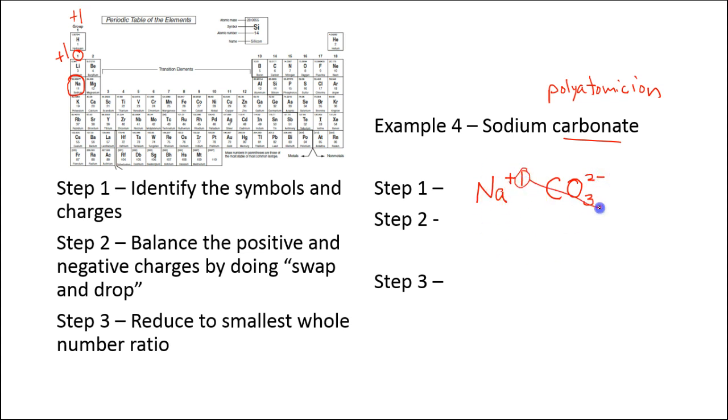And then we'll do our swap and drop. So in this case, we have 2 sodiums. We only have 1 carbonate, so we don't need any parentheses. And here we go. Step 3, reduce the smallest whole number ratio. That's not necessary because it's already reduced. So sometimes you don't need to do step 3. Sometimes you do. You have to look carefully. Remember, with the polyatomic ions, we don't ever want to change any of the subscripts on that. We'll use parentheses and add a subscript. And that's it for writing formulas from names.